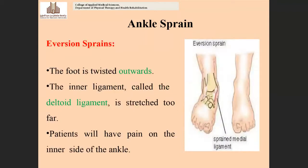The next type is the opposite — eversion sprain. Here the ankle goes into an everted position, which means pronation. Inversion means supination of the ankle joint, and eversion means pronation. In a pronated foot, you get injury to the medial ligaments. The foot is twisted outwards, which means pronation of the foot.